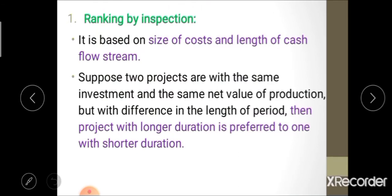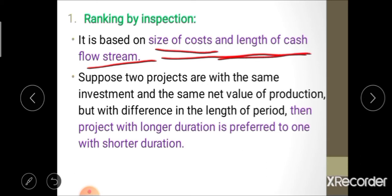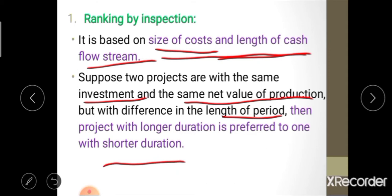The first method is ranking by inspection. As the name indicates, we simply give a rank based on inspection of the project. This method is based on the size of cost and length of cash flow stream. If two projects have the same initial investment and same net value of production but differ in length of period, then the project with longer duration is preferred over the shorter one.